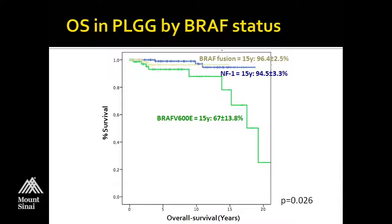On the other hand, the BRAF V600E patients — if you're looking out at 5 or even 10 years, they still seem to be doing relatively well. But as we get out into the 15- or 20-year timeline, we start to see these patients dying from their disease. There seems to be a bigger susceptibility for these V600E mutant patients to acquire additional hits like P16 deletion and undergo transformation. Some of the epithelioid GBM patients we may be seeing are actually a late manifestation of a transformed low-grade glioma in pediatrics.